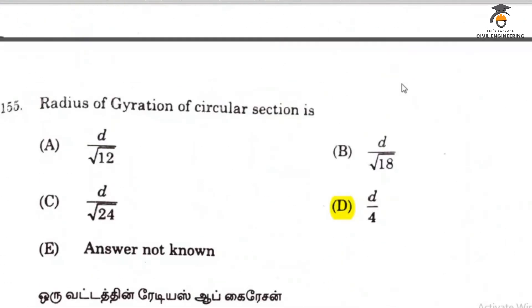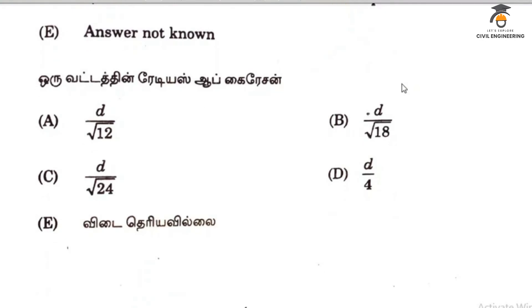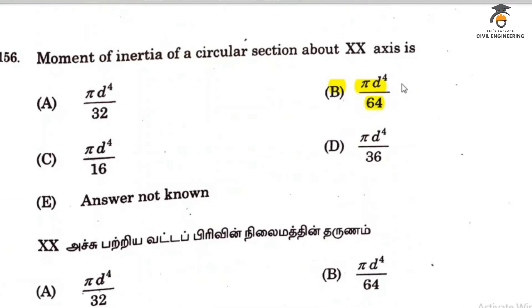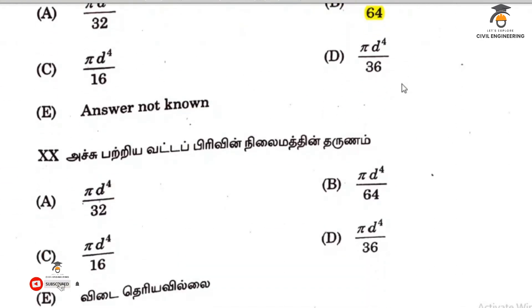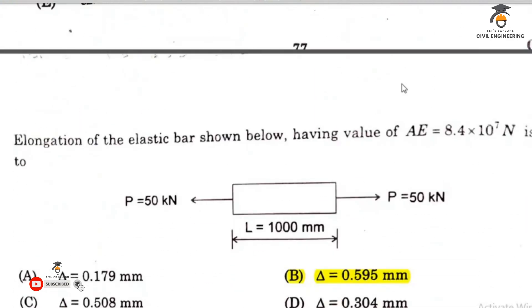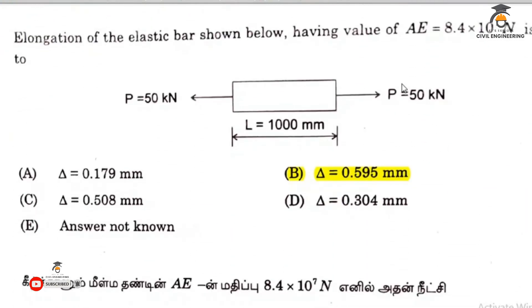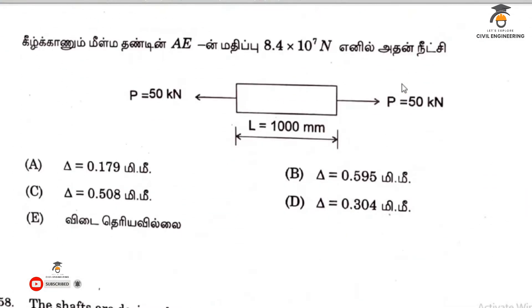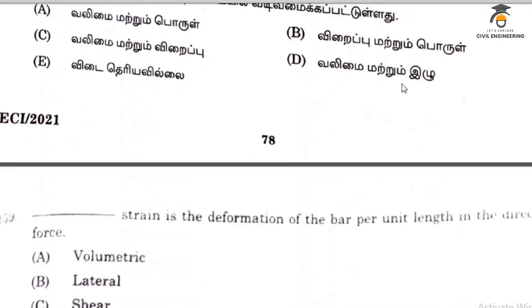Question 155 answer is D, specifically D by 4. The radius of a circle's circumference applies here. Question 156: moment of inertia of circle is πD⁴ by 64. Question 157 answer is 0.595M. Question 158 relates to strength and rigidity.